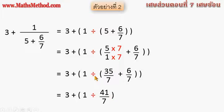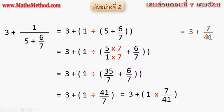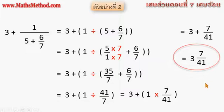The result is 41.7, giving 1. Then 41.7, then 1, then 3.